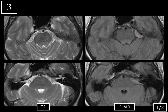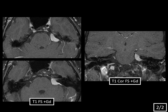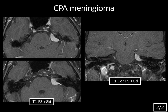What do you think about the signal intensity of this mass? It looks isointense to gray matter — the cortex of the brain — and there's also dural thickening inferiorly. When we give contrast, the mass is diffusely and very homogeneously enhancing. It's slightly extending into the internal auditory canal but is not centered within it — here's the normal right internal auditory canal for comparison. This is typical for a cerebellopontine angle meningioma.